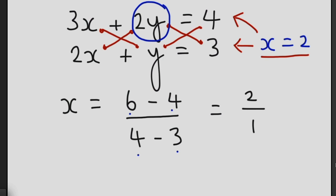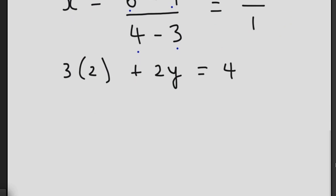But we'll go with the first one. So we're going to substitute 2 into this equation. So we're going to be left with 3 brackets 2 plus 2y equals 4. So 3 times 2 is 6. Add 2y equals 4.